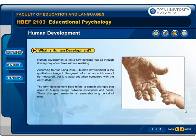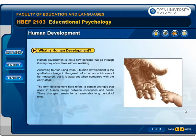What is human development? Human development is not a new concept. We go through it every day of our lives without realizing. According to Aten Long, 1980, human development is the qualitative change in the growth of a human, which cannot be measured, but it is apparent when compared with the early stage. The term development here refers to certain changes that occur in human beings between conception and death. These changes remain for a reasonably long period of time.